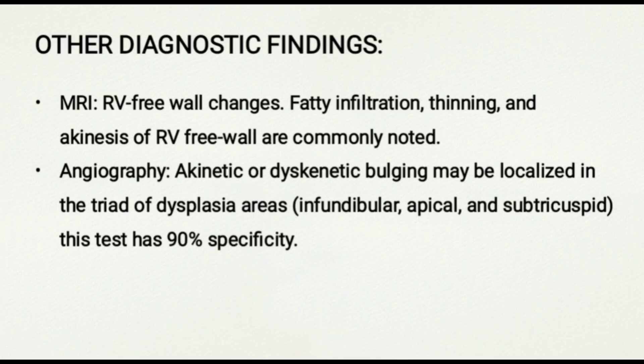MRI can play an important role in the diagnosis of ARVD by showing abnormalities in the right ventricle such as RV free wall changes, fatty infiltration, and thinning and akinesis of the RV free wall. Angiographic findings in ARVD typically include RV enlargement, localized areas of akinesia or dyskinesia, prominent trabecular structures with deep fissures, and potential localized aneurysms or outpouchings, indicating abnormal RV wall structure due to fibro-fatty replacement. However, this invasive procedure is rarely used due to the availability of non-invasive imaging techniques like cardiac MRI.